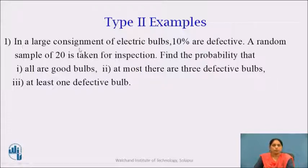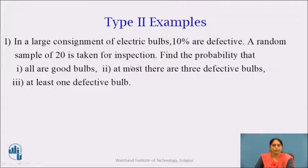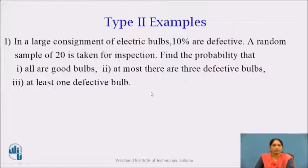First example: In a large consignment of electric bulbs, 10% are defective. A random sample of 20 is taken for inspection. Find the probability that: first, all are good bulbs; second, at most there are 3 defective bulbs; third, at least 1 defective bulb.